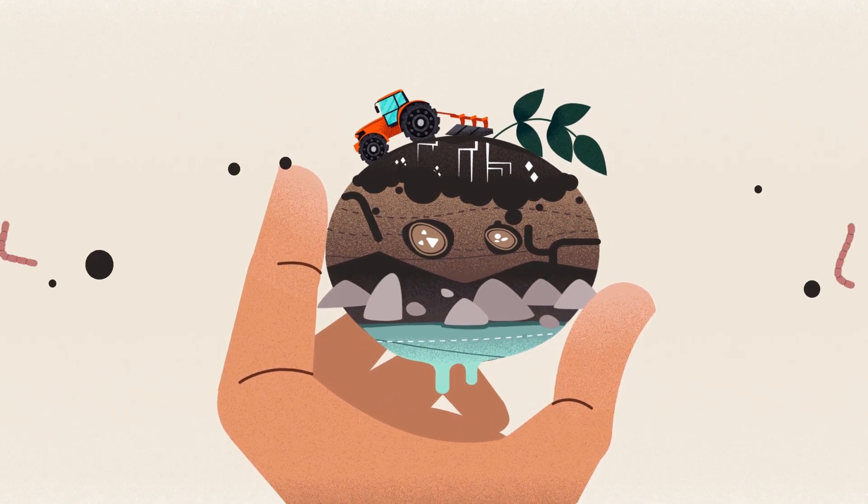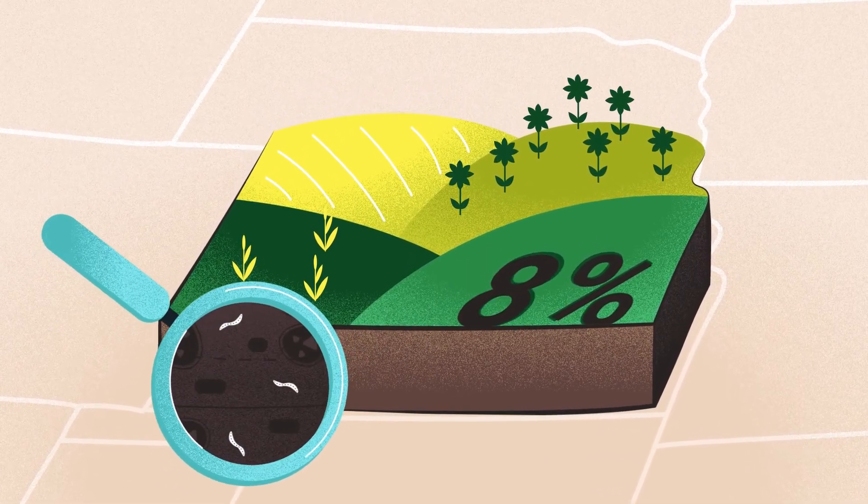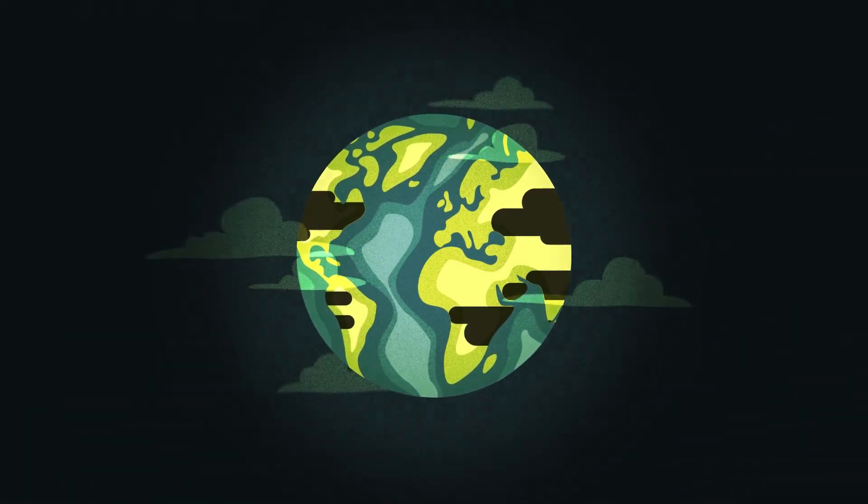As soil organic matter decreases, soil microbes die, and carbon leaves the soil and moves to the atmosphere. The Earth loses its strength.